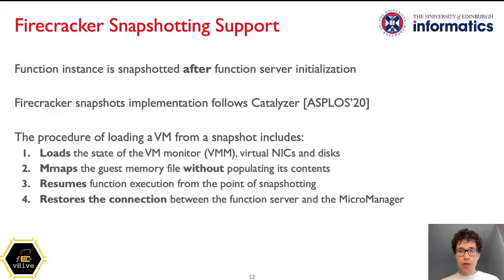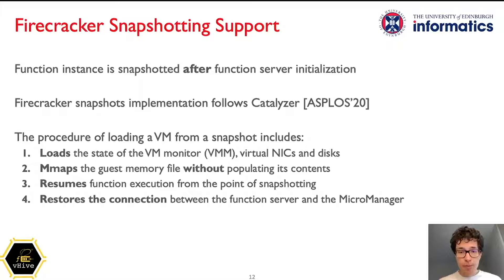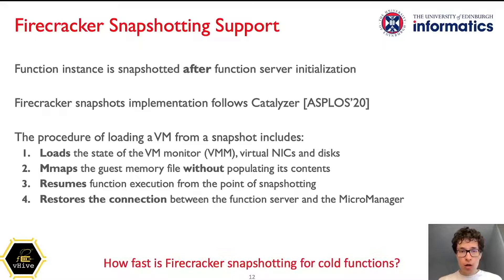Let us recall how Firecracker snapshots work. First, a snapshot of a VM is taken when a function in the VM is ready to serve incoming invocations. The procedure of loading a VM from a snapshot has three steps, similar to those described in the Catalyzer paper from ASPLOS '20. First, the hypervisor loads and restores the state of the VM monitor and all emulated devices. Then, the hypervisor maps the guest memory file into main memory without populating the memory contents and resumes VM execution from the point at which the snapshot was taken. Finally, the Micromanager restores the connection with the function inside the VM. Note that this step is not essential for generic VM restoration but is required to restore connectivity to the rest of the serverless infrastructure.